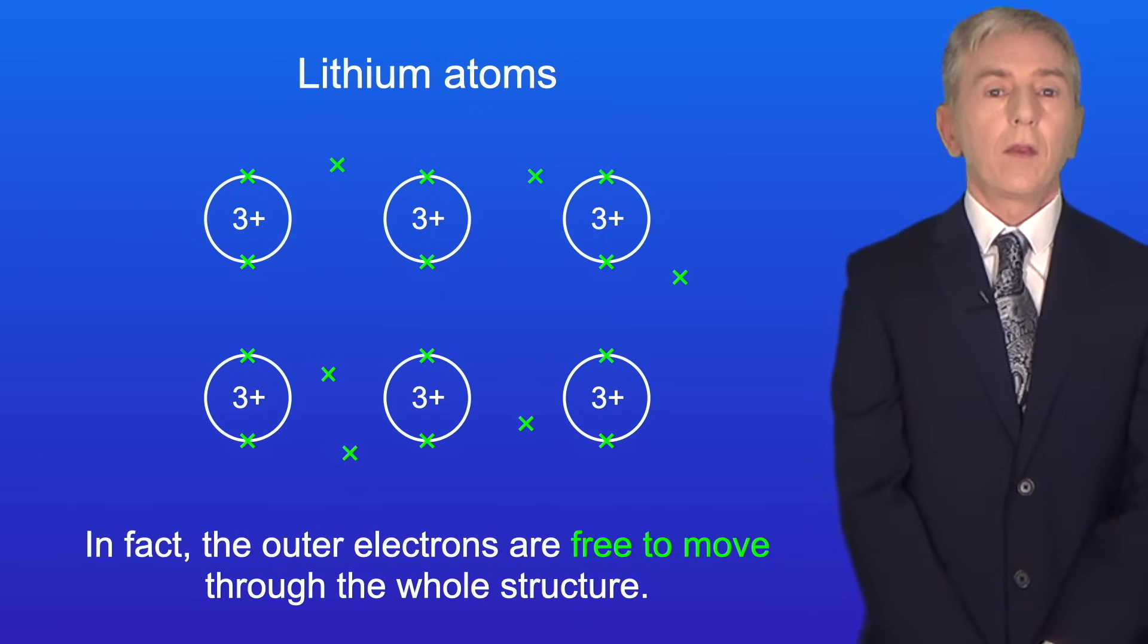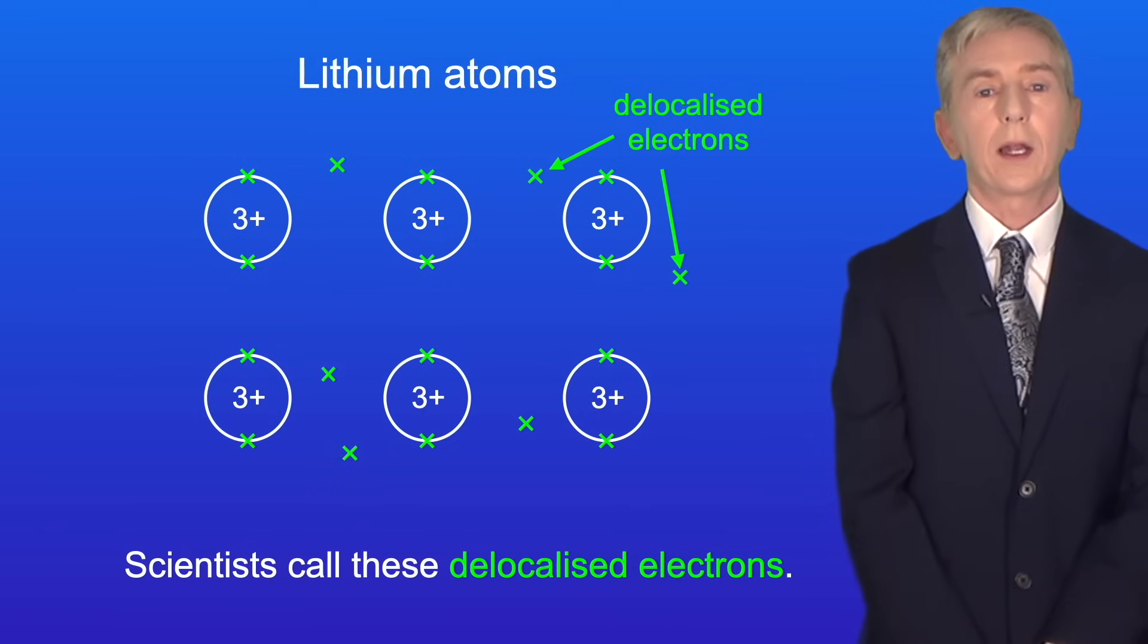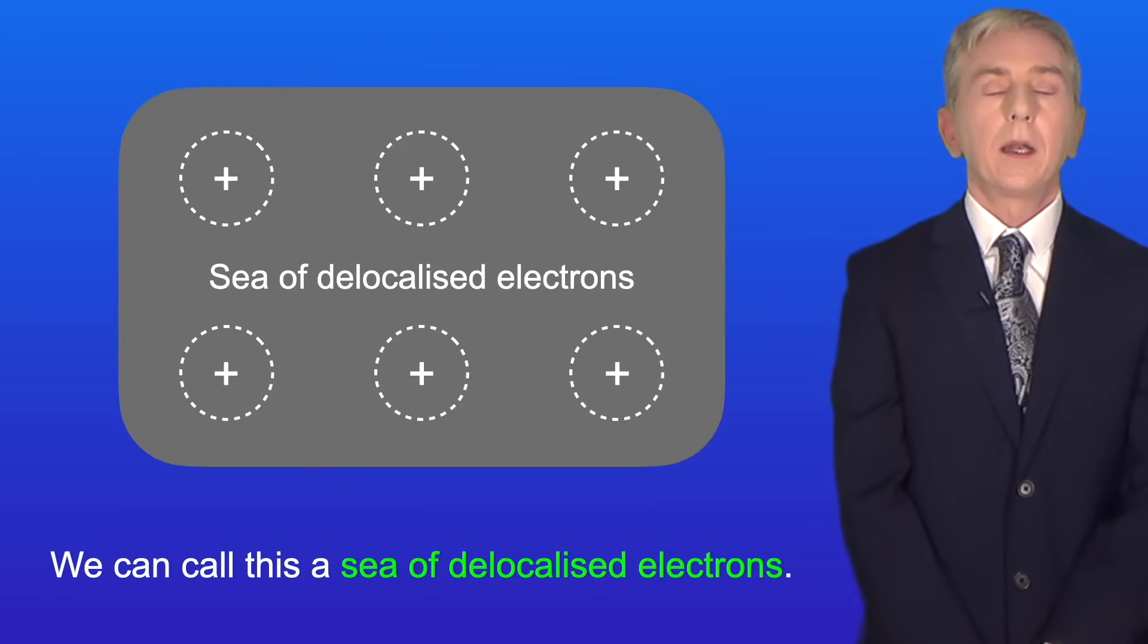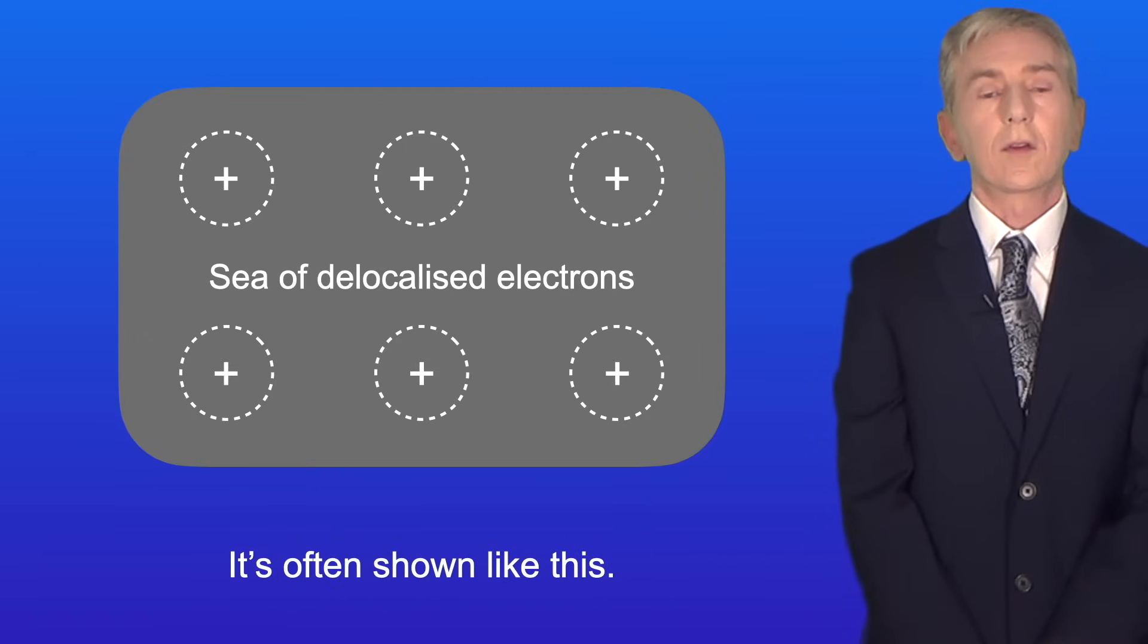In fact the outer electrons are free to move through the whole structure. Scientists call these delocalized electrons and I'm showing you these here. Now we can call this a sea of delocalized electrons and it's often shown like this.